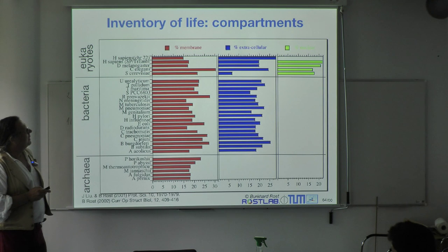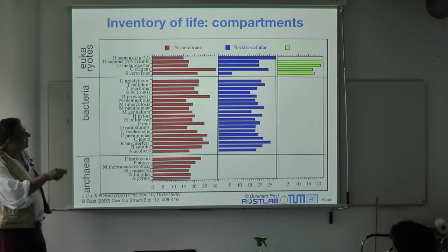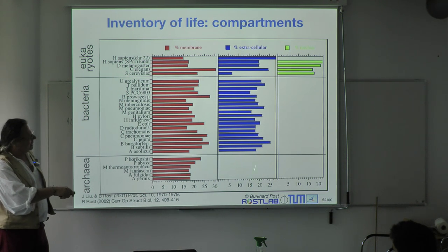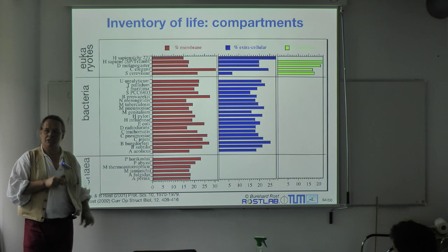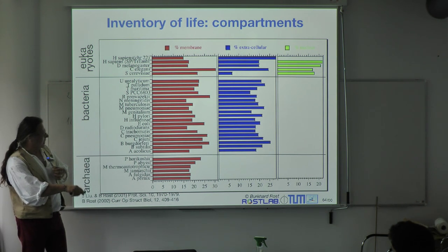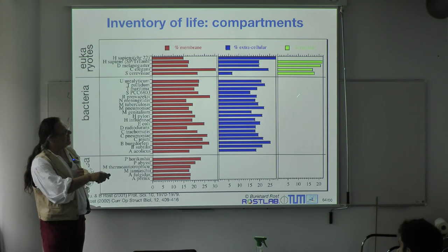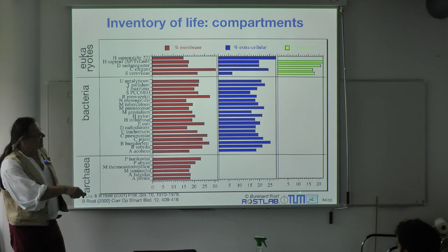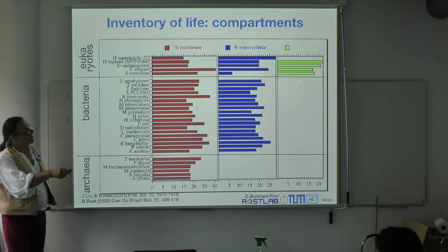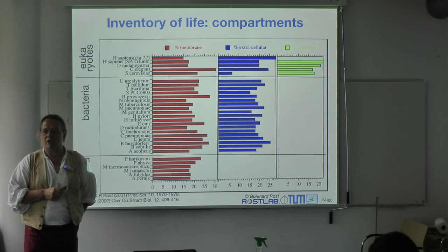About 15-35% are membrane proteins, about 15-20% are secreted proteins — proteins outside the cell. Nuclear proteins are in the ballpark of 15%. So roughly: 15% nuclear, 15% secreted, 20-something percent membrane proteins. This is a coarse-grained makeup of a cell. About 20% of all proteins are membrane proteins, about 50% of drug targets are membrane proteins, but only 1% of structures are membrane proteins — and that creates the background for why membrane prediction is so important.